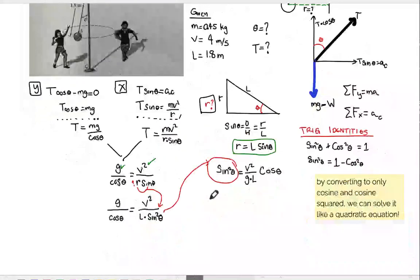If you notice this, by converting to only cosine and cosine squared, we can actually solve it like a quadratic equation. So that's going to be cool. First we substitute in our sine squared to become one minus cosine squared theta. And now we're just going to replace v squared over g times l into their numerical values. That's going to be v squared is 16, and that's 9.8, and that's 1.8 times cosine of theta. So notice we have nothing but cosines.